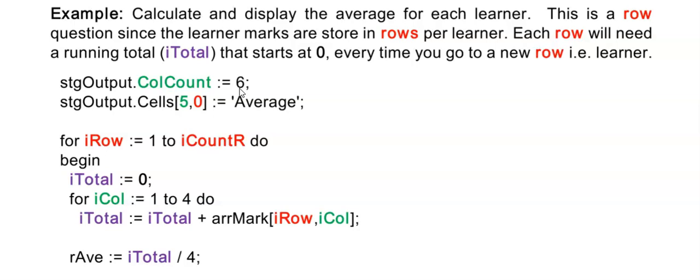I need an extra column for my column counter, and then I'm displaying the average in column 5 and row 0 as the label.